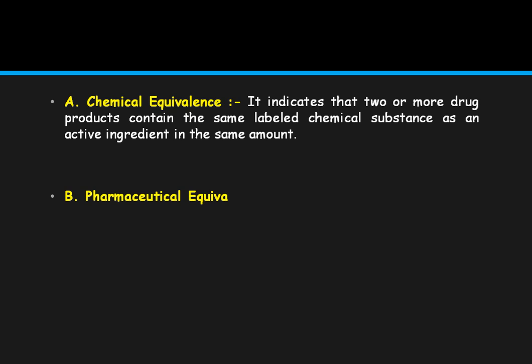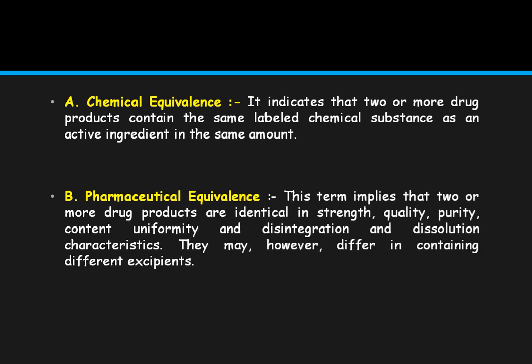Chemical equivalence indicates that two or more drug products contain the same labeled chemical substance as the active ingredient in the same amount. For example, if we have two analgesic formulations — say, a generic paracetamol and Crocin — and both contain 650 mg of paracetamol as the API, then we can say that both are chemically equivalent.